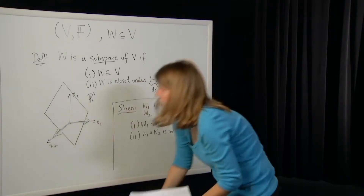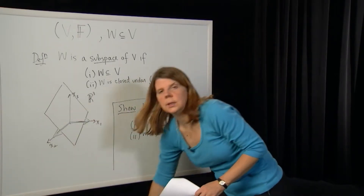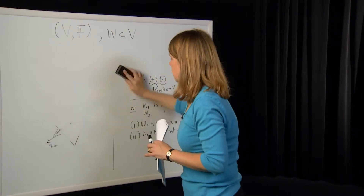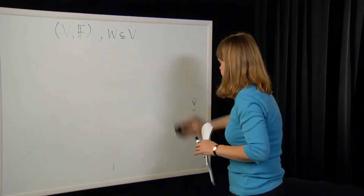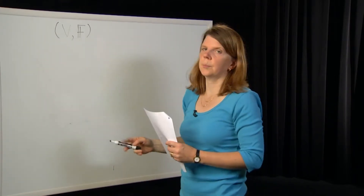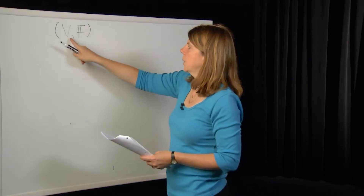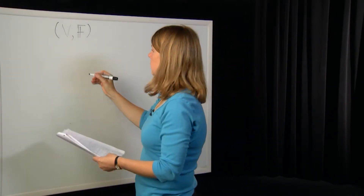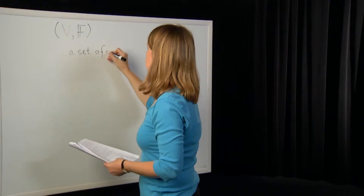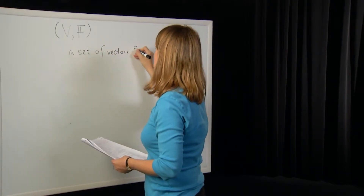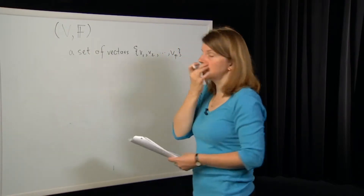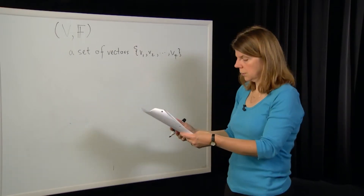So the intersection of subspaces is always a subspace — easy to prove. The union is not necessarily. Now we move on: having defined subspaces, we'd like to define what we mean by bases of a vector space. First, let's define the property of linear independence. Suppose we have a set of vectors v1, v2, up to vp — a set of p elements taken from V.